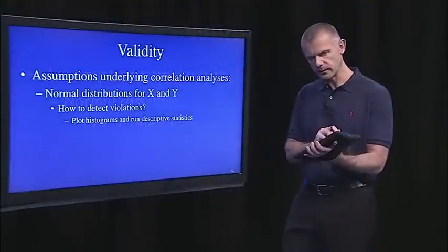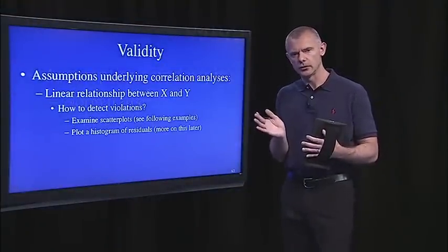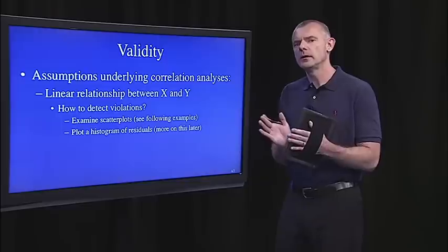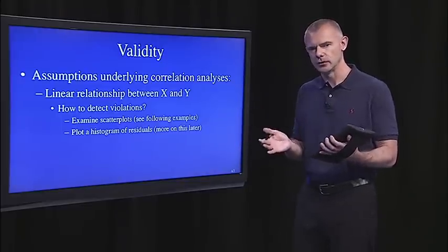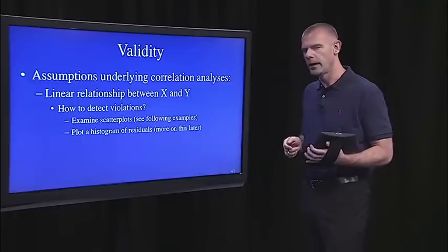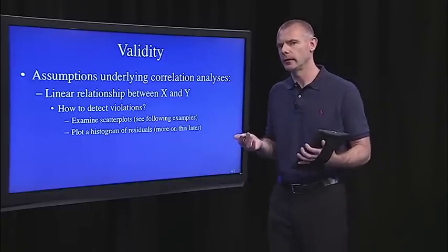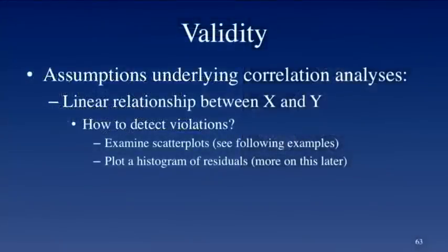What about the second assumption? Do we truly have a linear relationship? So far, we've only been talking about correlations that depict linear relationships between X and Y, or linear functions between X and Y. How do we know if we violated that assumption? Well, just look at the scatter plot. Does the scatter plot look like there's a linear relation, or does it look like it has a more complex function between X and Y?